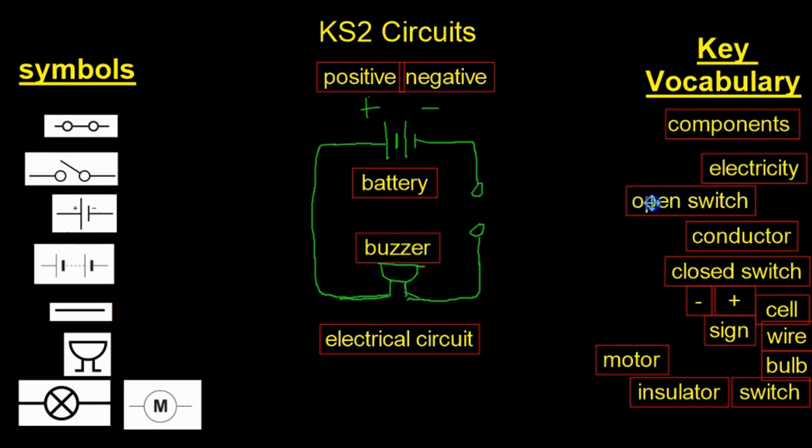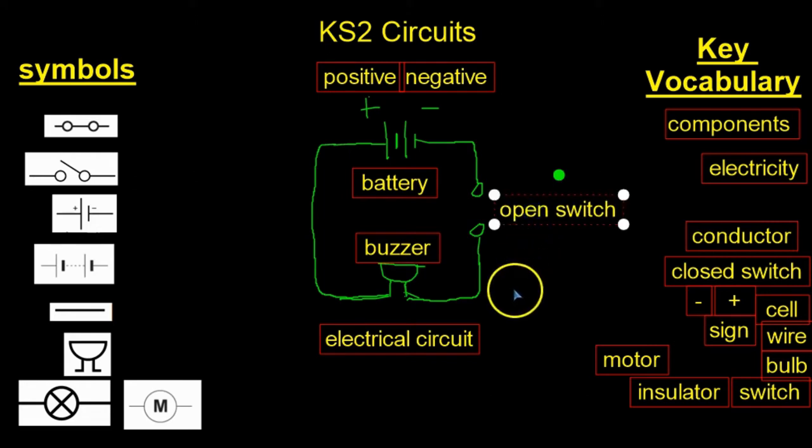This is called an open switch, and that means that the flow of electricity is being interrupted here. The electricity cannot jump that much of a space, so that means that the flow of the electricity is stopped. That means the buzzer would not work.